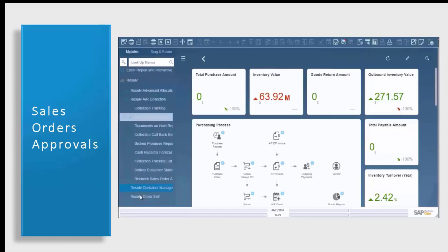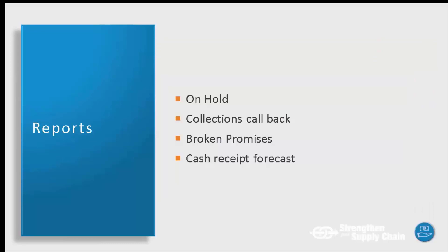Now let's take a look at our AR collections available reports. The first report is our on hold report, which gives you an overview of any of your sales orders currently on hold, along with information such as who the salesperson is, who can approve the order, and what's the basis for the hold. Our second report is our collections callback report, which allows management to get an overview of how productive a collection specialist has been or to review the status of collections activities. Our third report is our broken promises report, which allows the user to see and analyze how reliable a customer has been regarding promised payments. If you know that a customer is very reliable based upon reviewing their history, you may allow orders on hold to be approved in advance of receipt of payment.